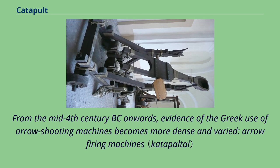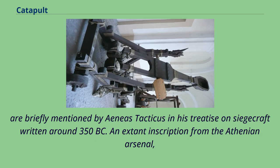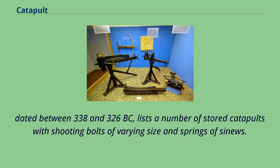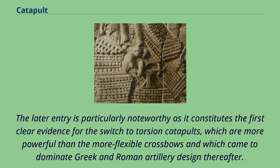From the mid-4th century BC onwards, evidence of the Greek use of arrow-shooting machines becomes more dense and varied. Arrow-firing machines are briefly mentioned by Aeneas Tacticus in his treatise on siegecraft written around 350 BC. An extant inscription from the Athenian arsenal, dated between 338 and 326 BC, lists a number of stored catapults with shooting bolts of varying size and springs of sinews. This constitutes the first clear evidence for the switch to torsion catapults, which are more powerful than crossbows and came to dominate Greek and Roman artillery design thereafter.